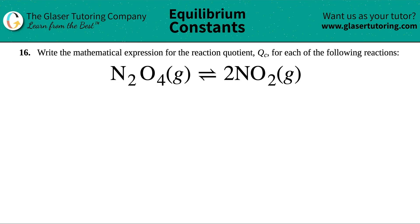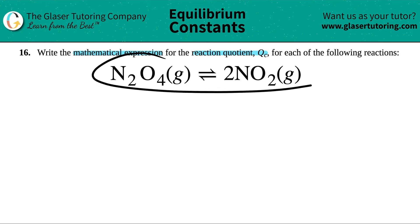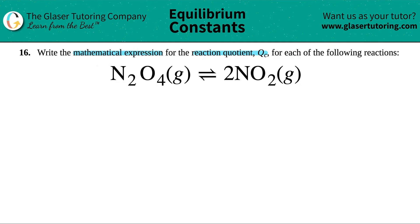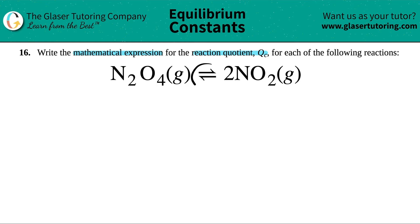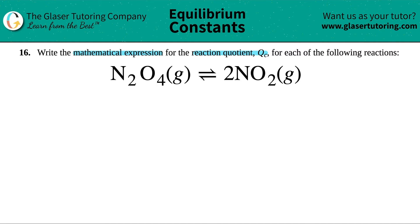Number 16. Write the mathematical expression for the reaction quotient, which is QC, for each of the following reactions. We have to write the QC for N2O4 gas, which comes to equilibrium with 2NO2 gas.